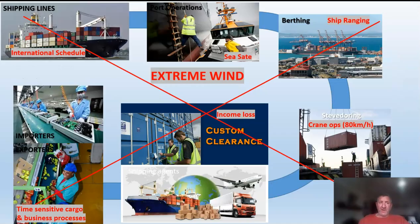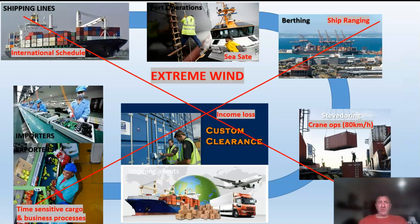But the port suffers from a very interesting and severe problem: in cases of extreme wind, which we get in Cape Town, the whole system grinds to a halt. There are ships on an international schedule, and if there's a backlog in Cape Town harbor, they simply sail on to the next port. So people who want to exchange goods in Cape Town have to truck their containers to other ports, which adds costs.